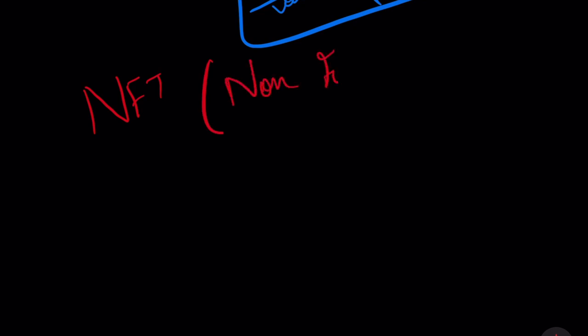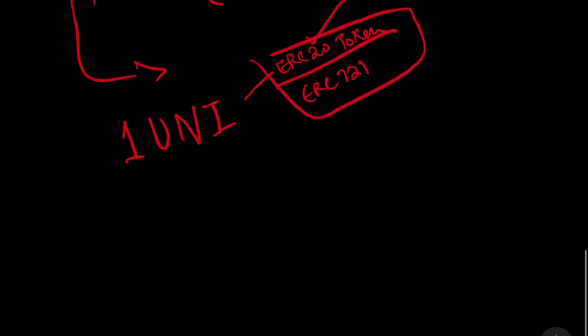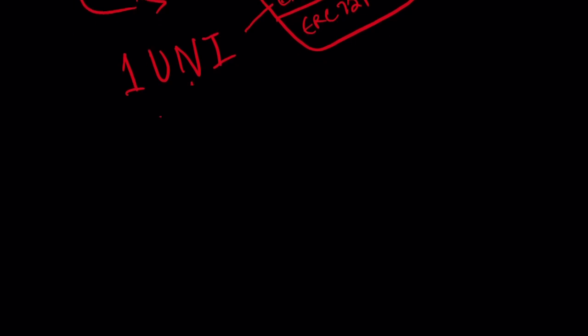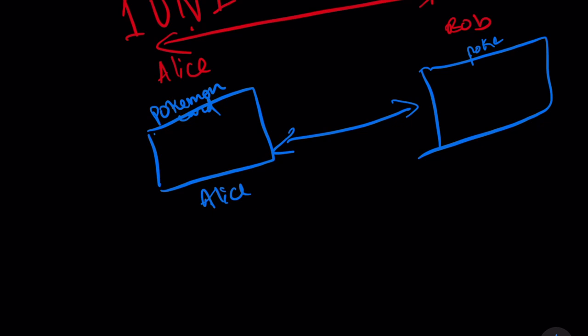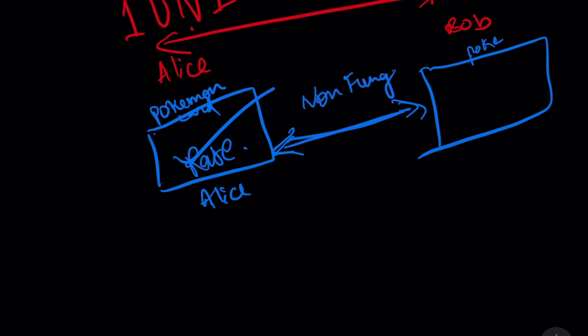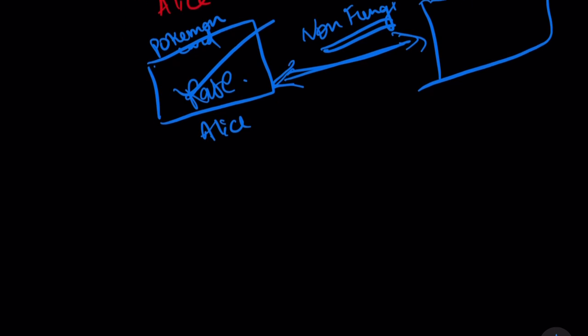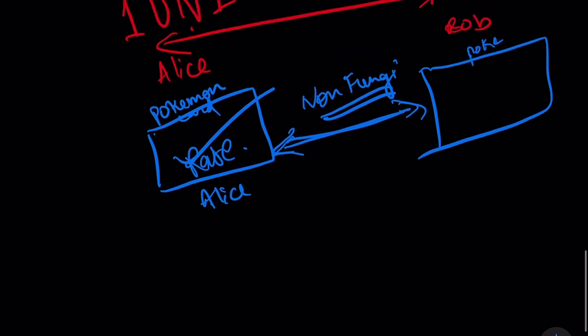Now let's talk about NFTs — non-fungible tokens. Let's compare with a fungible token. A Uniswap token, which is an ERC-20 token, is fungible — if Alice and Bob both hold one token, they can interchange them and nothing changes. But if they have Pokemon cards, Alice's card and Bob's card are not interchangeable because one could be a rare card. That is what non-fungibility means: you hold something unique and valuable that is not tradable for the same price as something else.